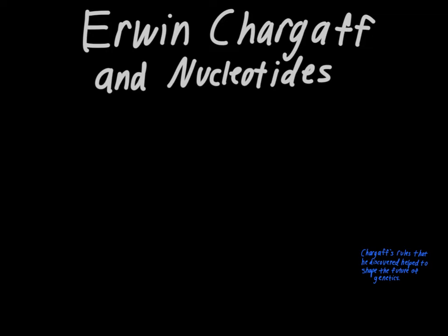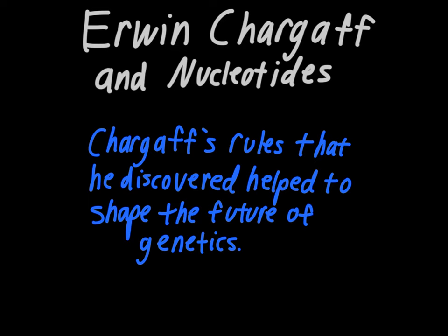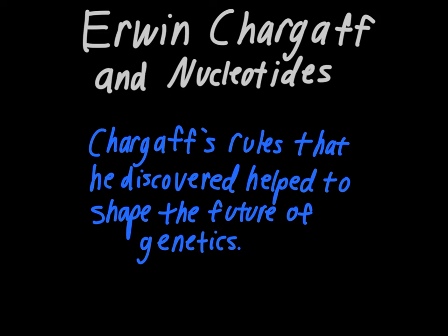The first thing to talk about with Chargaff is a little bit about his history. He grew up in Austria-Hungary and then ended up immigrating to the United States during the Nazi era. Once he got to the U.S., he eventually ends up becoming a biochemist working at Columbia University. While he's there, he's studying genetics and he ends up establishing rules that lay the foundation for further discoveries in the field of genetics. He's one of the big contributors to Watson and Crick eventually figuring out the structure of DNA. The first things to talk about are his two rules and what we know about nucleotides because of Erwin Chargaff and his research.